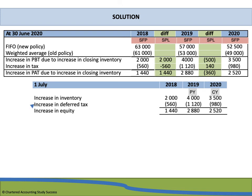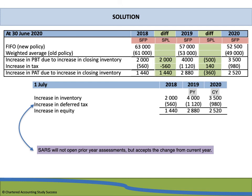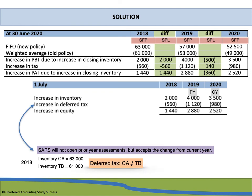We refer to deferred tax because SARS will not reopen prior year assessments but accepts the change from the current year. For 2018, the inventory carrying amount under the new policy is R63,000, but the tax base remains R61,000 — since SARS will not reassess that year. This difference between carrying amount and tax base gives rise to a deferred tax liability for the 2018 financial year.